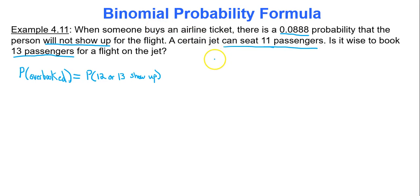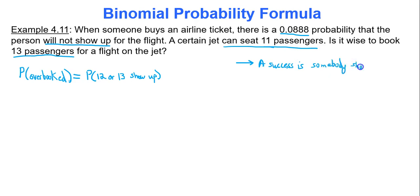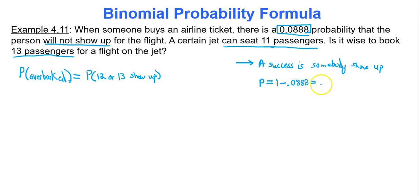Because this is a binomial probability formula question, we're going to use the binomial probability calculation formula. I'm going to define the binomial experiment. A success is somebody shows up. So what's the probability someone shows up? The probability someone doesn't show up is 0.0888, so the probability someone does show up is 1 minus that — 1 minus 0.0888 — and you get 0.9112.